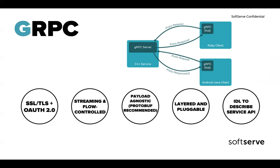gRPC is layered and pluggable, so you can add logging, monitoring, and so on. The IDL uses protobufs to describe service APIs. That's how gRPC handles building servers, building clients, and defining services.